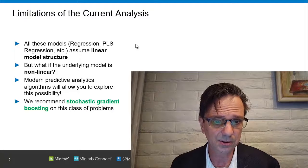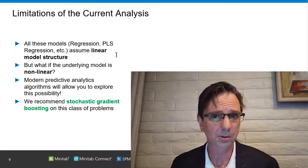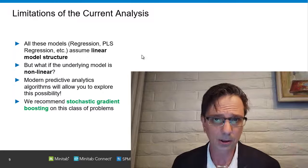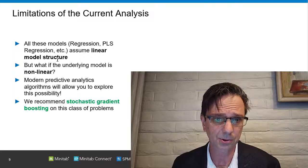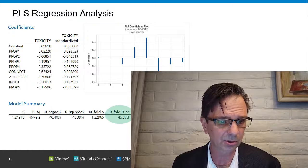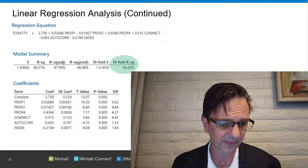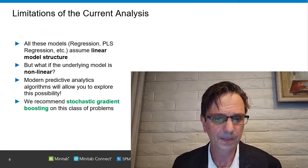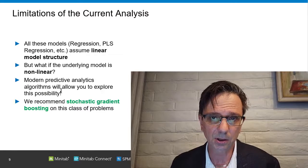But it also has certain limitations, and let me highlight that here because this is going to be the key to what I'm about to talk about next. Limitations of the current analysis: notice that all these models, whether it's a traditional regression or any of its variants, PLS, principal components regression, regularized regressions, etc., they all assume linear model structure. So the end equation is always going to look something like this. The coefficients will change depending on the method that you use. But this begs the question immediately: what if the underlying model structure is non-linear?